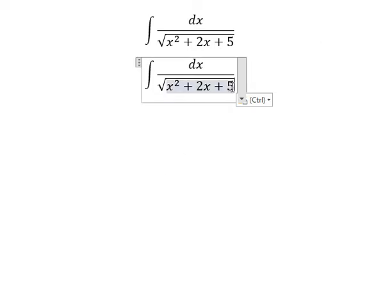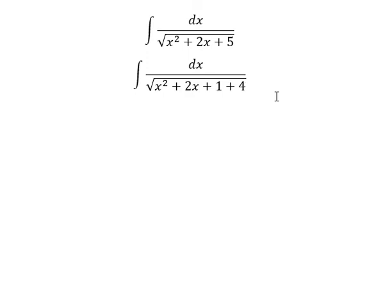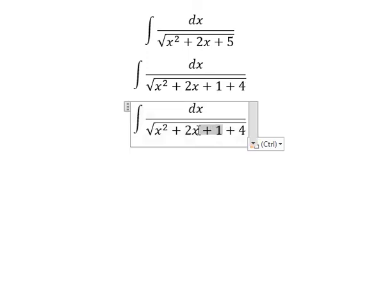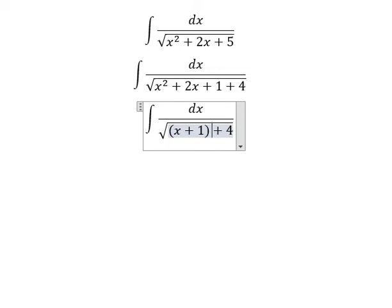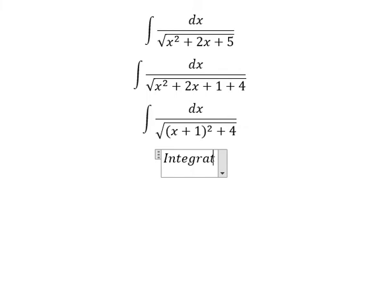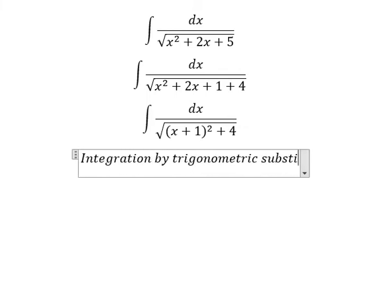Number five, we can rewrite as 1 plus 4. This one is about identity. So we change into x plus 1 to the power of 2. Next, we need to use integration by trigonometric substitution.